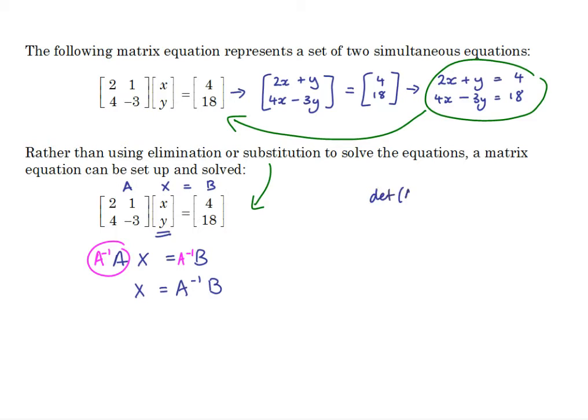Determinant is negative 6 minus 4, so negative 10. Inverse is negative 1 tenth. So we have negative 1 tenth, swap that diagonal, make the other diagonal negative. So we have negative 1 tenth times the matrix negative 3, negative 1, negative 4, 2 multiplied by b which is 4, 18.